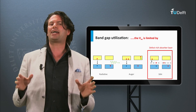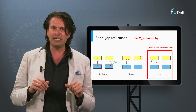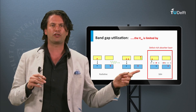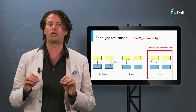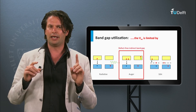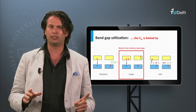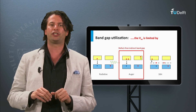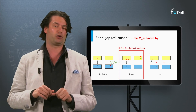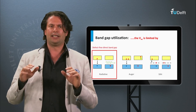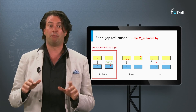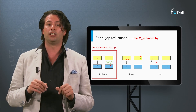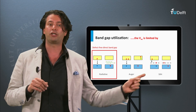Going back to the open-circuit voltage: in defect-rich solar cells, the open-circuit voltage is limited by Shockley-Reed-Hall recombination. In defect-free solar cells based on indirect bandgap materials, the open-circuit voltage is limited by Auger recombination. In defect-free solar cells based on direct bandgap materials, the open-circuit voltage is limited by radiative recombination.